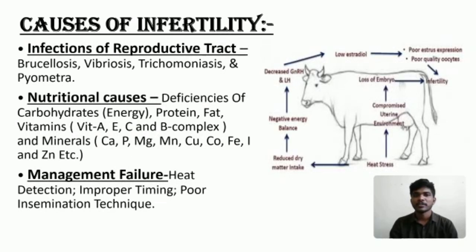Nutritional causes of infertility include deficiency of carbohydrates, protein, fat, and vitamins such as vitamin A, vitamin E, vitamin C, and B complex. And also deficiency of some minerals such as calcium, phosphorus, magnesium, manganese, copper, cobalt, iron, iodine, zinc, and others.